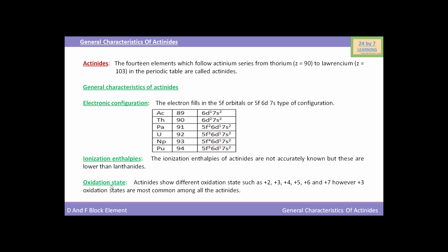Now we will see the oxidation states of actinides. Actinides show different oxidation states such as +2, +3, +4, +5, +6, and +7. However, the +3 oxidation state is most common among all the actinides.